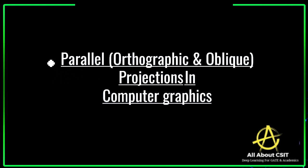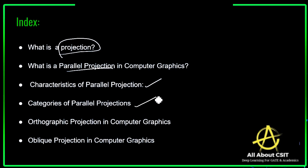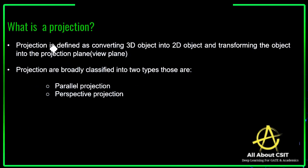In this video we will see another concept in computer graphics: parallel projections. The topics covered here are what exactly a projection is, what is meant by parallel projection in computer graphics, the characteristics of parallel projections, the categories, and finally the types of parallel projection — orthographic and oblique projection — all explained with examples.